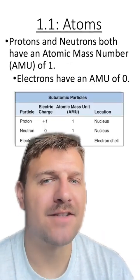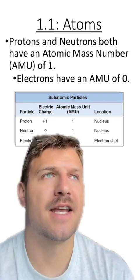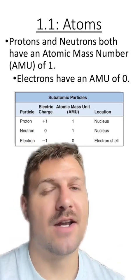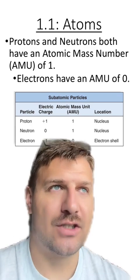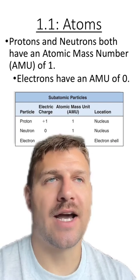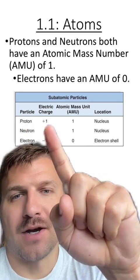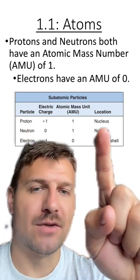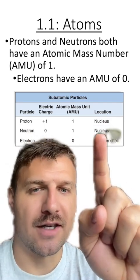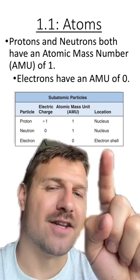Protons and neutrons have something called one atomic mass unit. This is going to help us understand how we weigh an atom. Electrons, on the other hand, have an atomic mass unit of zero. They technically do have weight, but it's so insignificant to the total weight of the atom that we just give it an AMU unit of zero. So, proton: positive charge, one atomic mass unit, and its location is the nucleus. Neutron: no charge, one AMU located in the nucleus. Electron: negative charge, no AMU found in the electron shell.